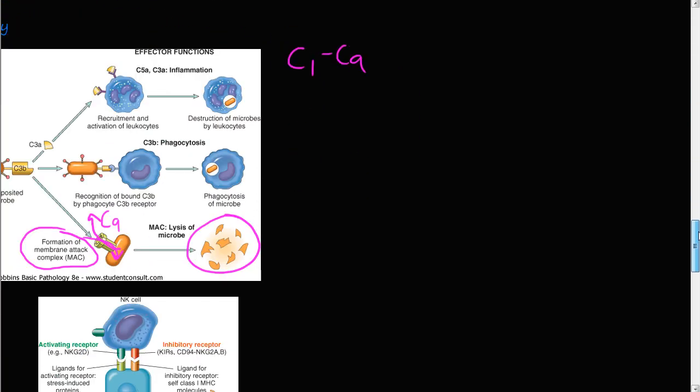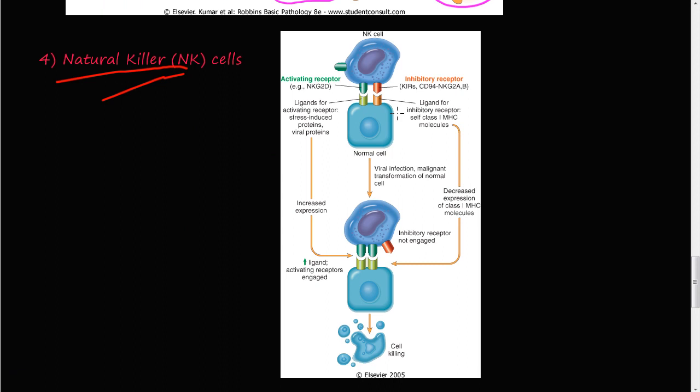And in order to discuss this I have a picture here. This picture comes from the Pathological Basis of Disease. Kumar is the author of Robbins-Cotran Pathological Basis of Disease. So here is the natural killer cell.